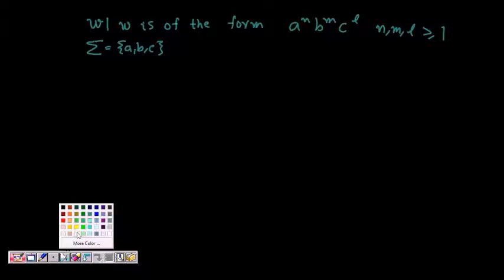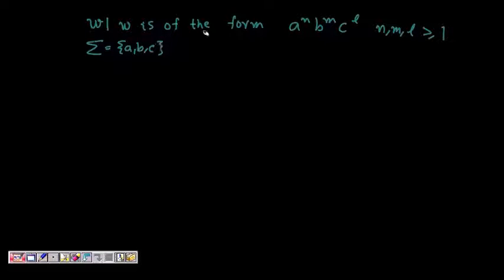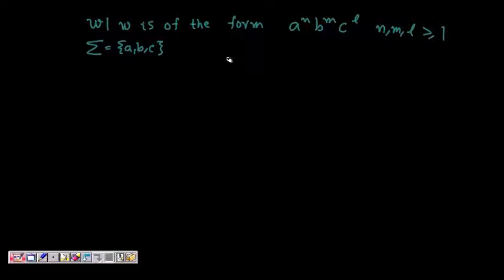In this lecture, we are going to learn about the string of the form a^n b^m c^l, where n, m, and l are greater than or equal to 1 and are natural numbers. So your language has alphabet {a, b, c}.